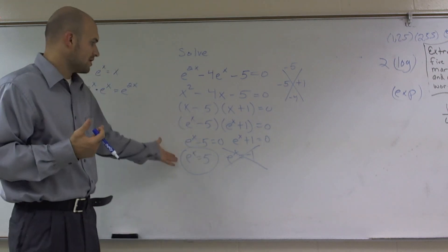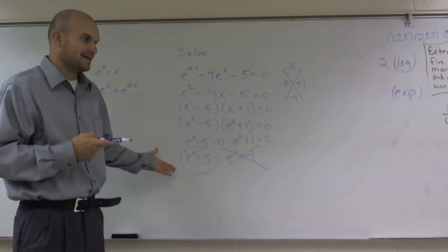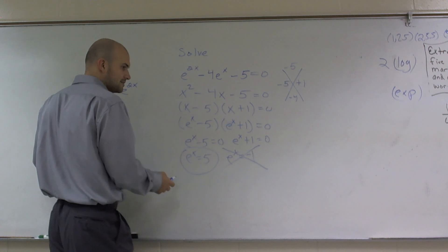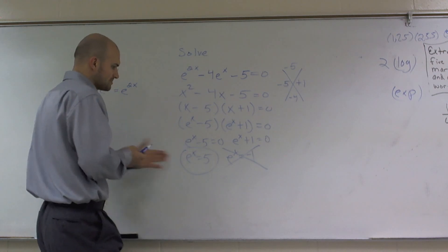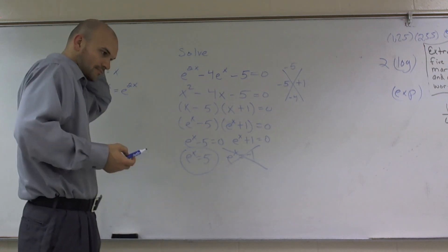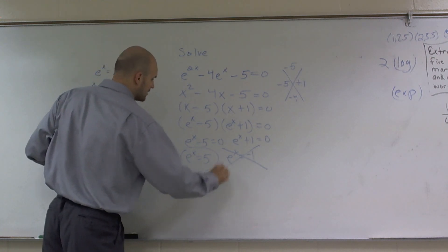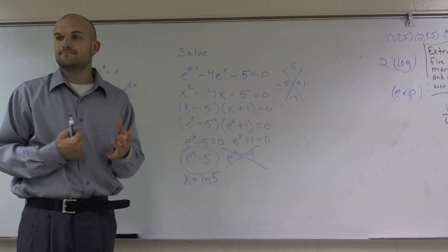And then, to solve for that, we need to figure out what value of x. So what I can do is take the ln of... I'm sorry, transfer this to a logarithmic form. So therefore, x equals ln of 5. And that's how you solve the answer. That's it.